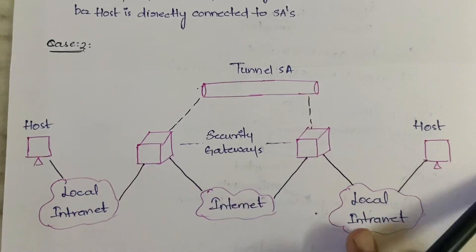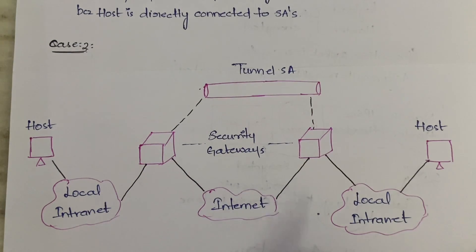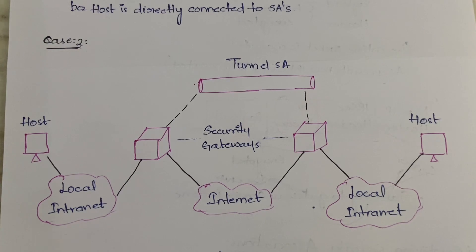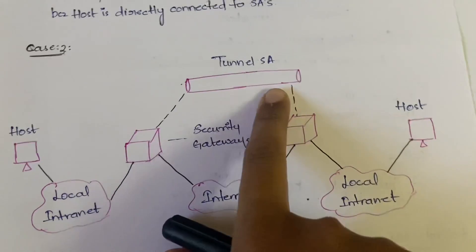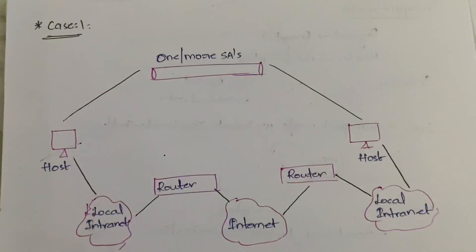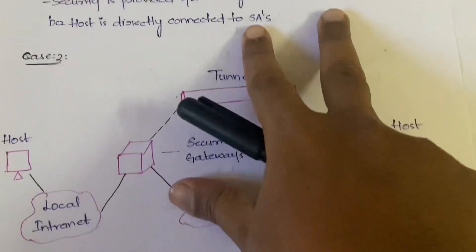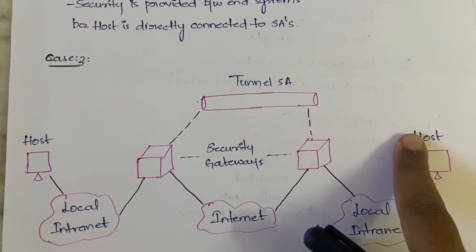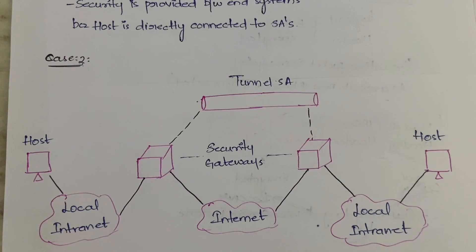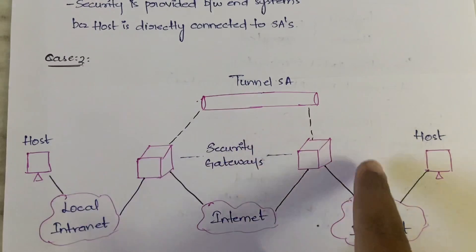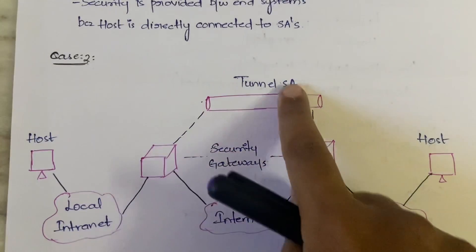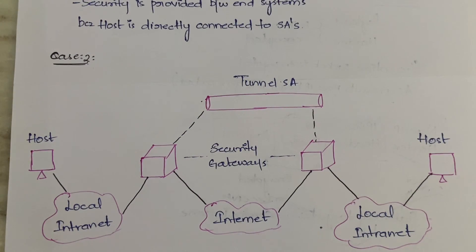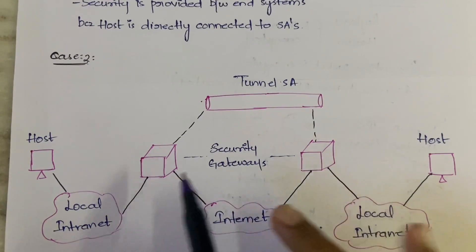Case two is a bit different compared to case one. Here you will have a tunnel security association instead of one or more simple security associations. One more thing to remember: the security is not provided directly to the host. In tunnel mode we have security gateways — those two elements represent the security gateways — so the security is provided to the security gateways.